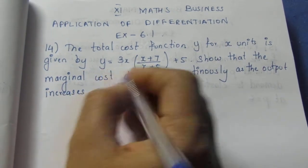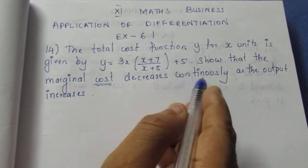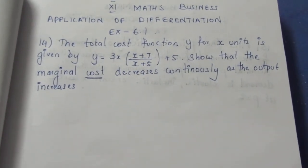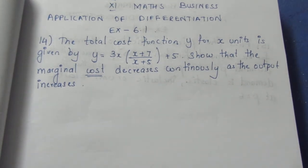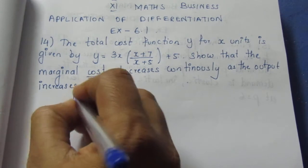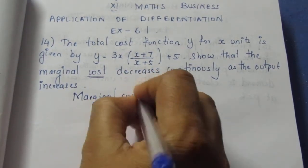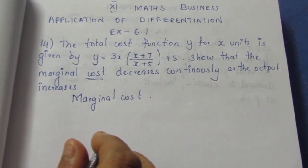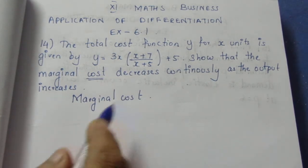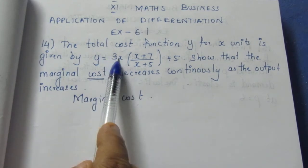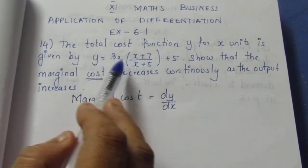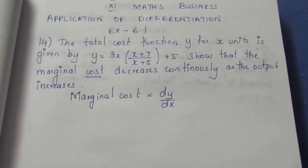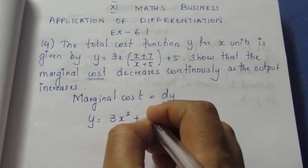So, marginal cost decreases continuously as the output increases. To show this, we need to find the marginal cost. If the marginal cost is positive as output increases, we can conclude accordingly. So first, let us find the marginal cost.